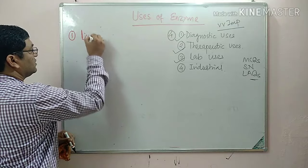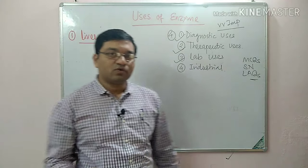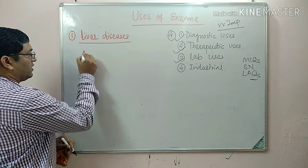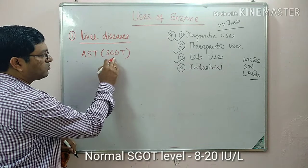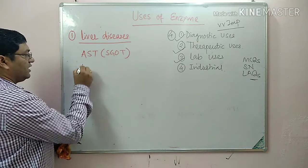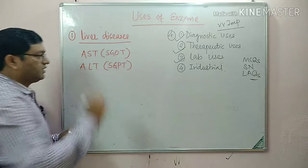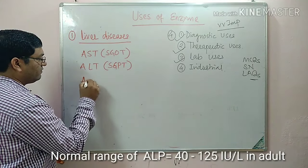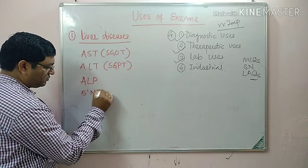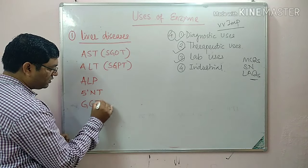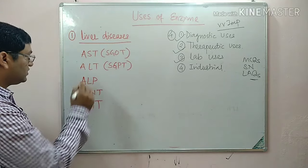The first and most important organ is the liver. Enzymes useful for diagnosis of liver diseases include AST — also known as SGOT, aspartate transaminase or serum glutamate oxaloacetate transaminase — then ALT, alanine transaminase or SGPT, then alkaline phosphatase, 5'-nucleotidase, GGT (gamma-glutamyl transferase), and LDH isoenzymes 4 and 5.